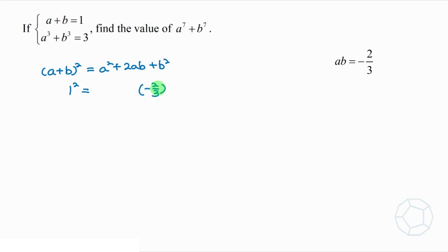So it is a square plus 2 times bracket minus 2 over 3 plus b square. So a square plus b square is equal to 1 minus negative 4 over 3, which is 7 over 3.